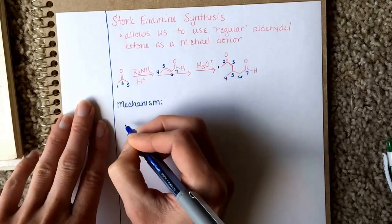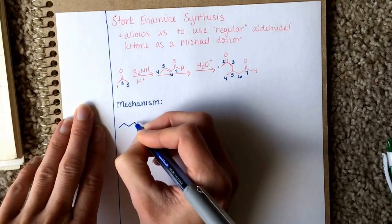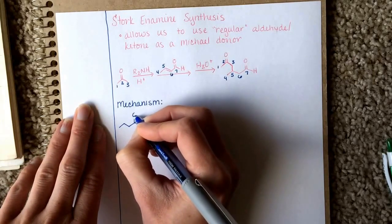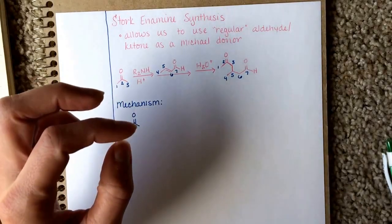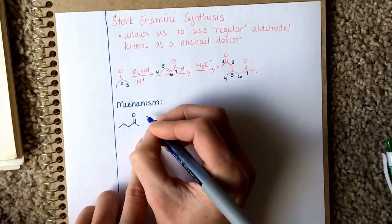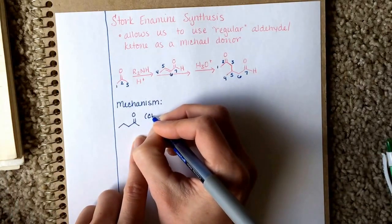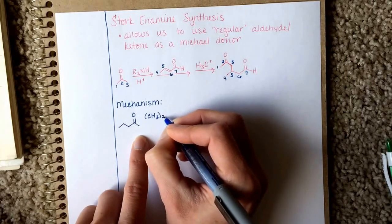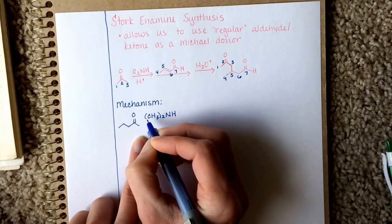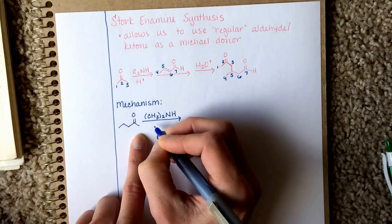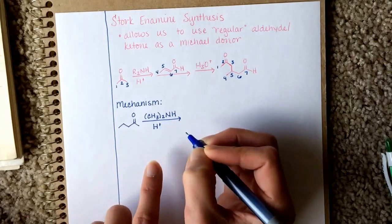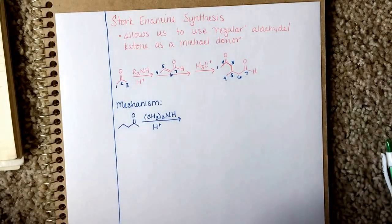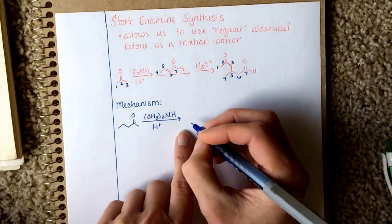Now, I'm not going to show the whole mechanism for the enamine conversion, because we've already covered that mechanism. And maybe you forgot it, and that's okay. Just go back to Chapter 20 and look it up again. I'm going to be using this methylamine. It doesn't matter. Like I said, it doesn't matter what the R groups are on that amine, because they're just going to end up coming off anyways.